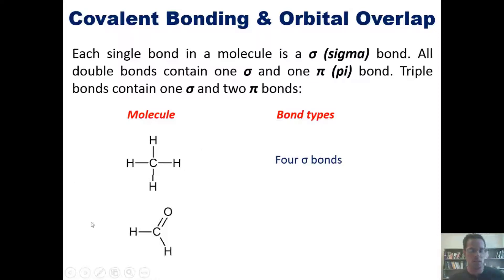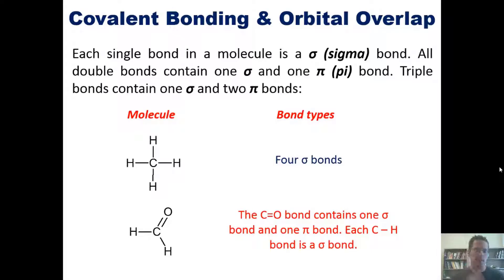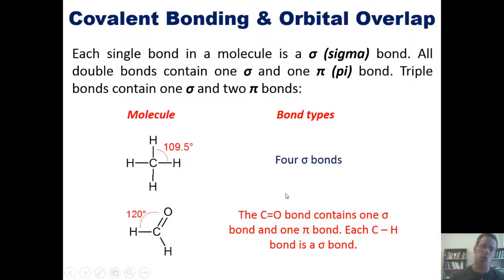By comparison, formaldehyde has a carbon-oxygen double bond and two separate carbon-hydrogen single bonds. The carbon-oxygen double bond contains one sigma and one pi bond, while each carbon-hydrogen bond is a sigma bond. Therefore, this molecule in total has three sigma bonds and one pi bond. By way of review, the bond angles around methane's carbon should be 109.5°, while the bond angles around formaldehyde's central carbon should be about 120°.